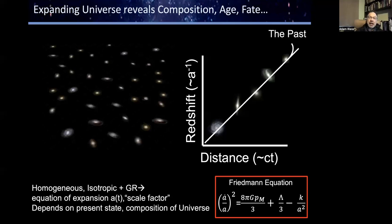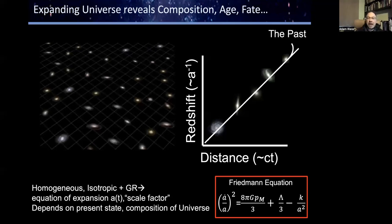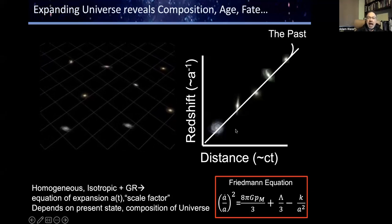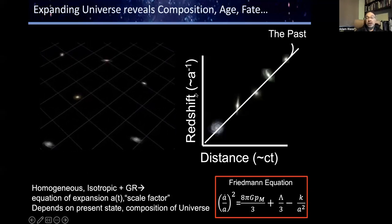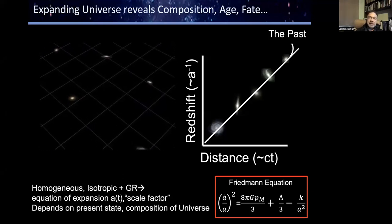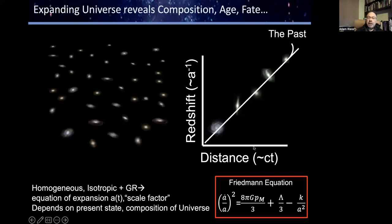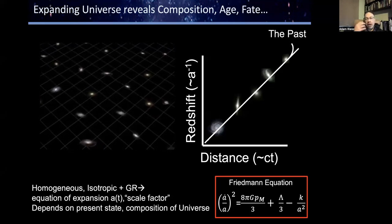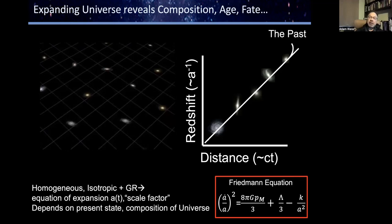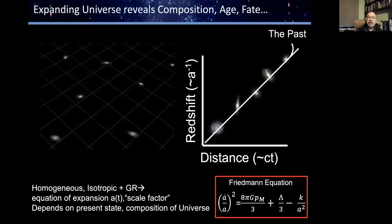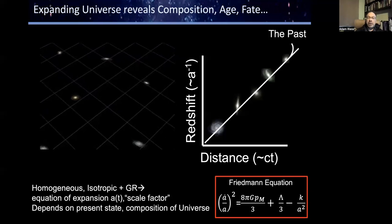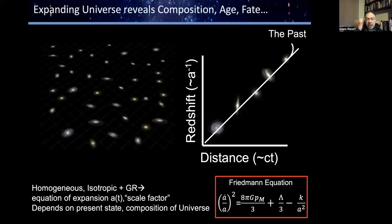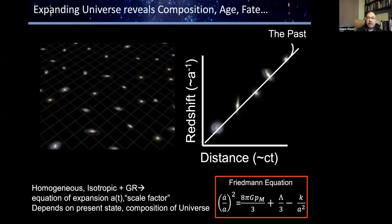We can't directly observe A, the scale factor, or T, time, but we can observe proxies for both. So instead of A, the scale factor, we observe or measure redshifts of distant galaxies, and instead of measuring the time to which we are looking, we measure distance, and through knowledge of the speed of light, we can relate that to time. In the observer's frame, what's known as the Hubble diagram or redshift versus distance relation is how we can learn about the expansion of the universe, A-dot.